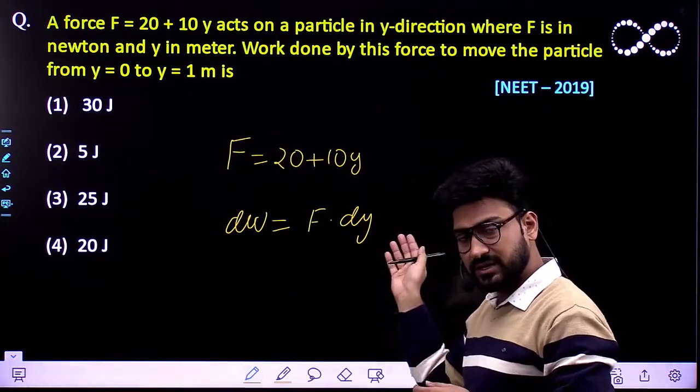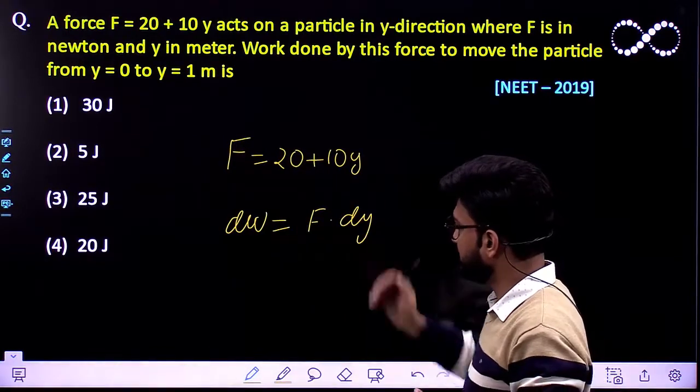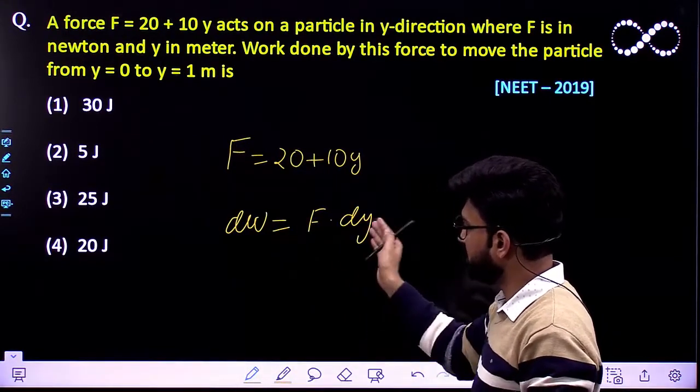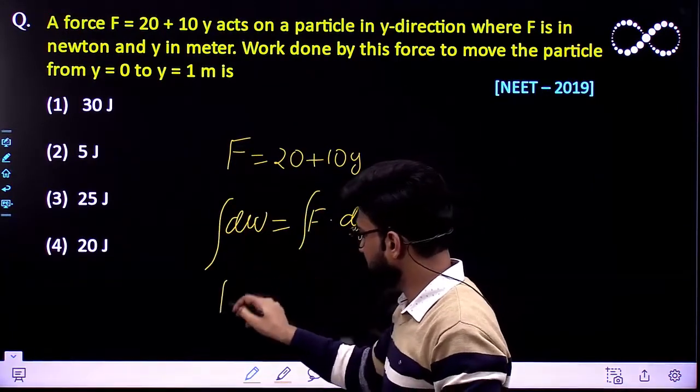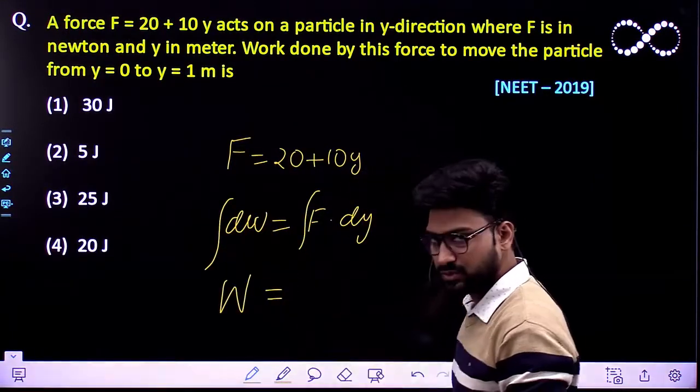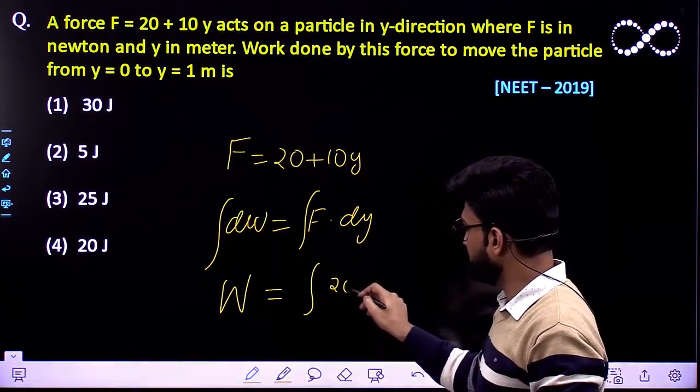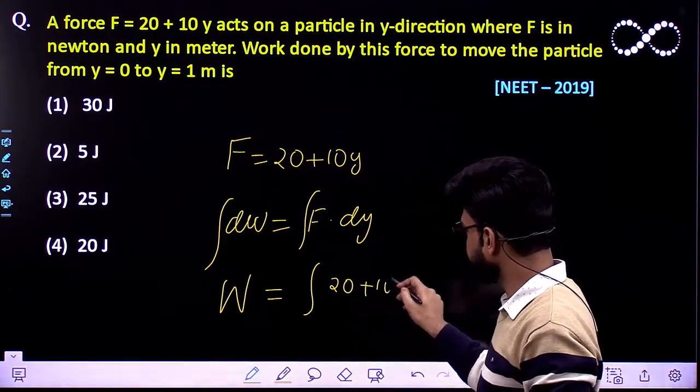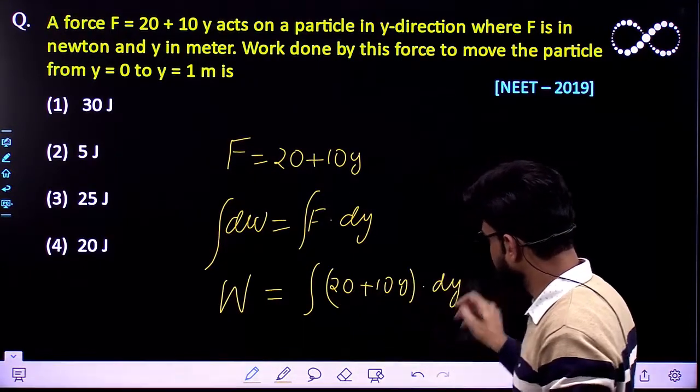In other directions the work done would be 0. So it would be work done in this particular direction, it would be F dot DY. So if we integrate it, so if suppose W is the work done, total work done, we will be putting the value of F over here so you will be getting 20 plus 10Y into DY.